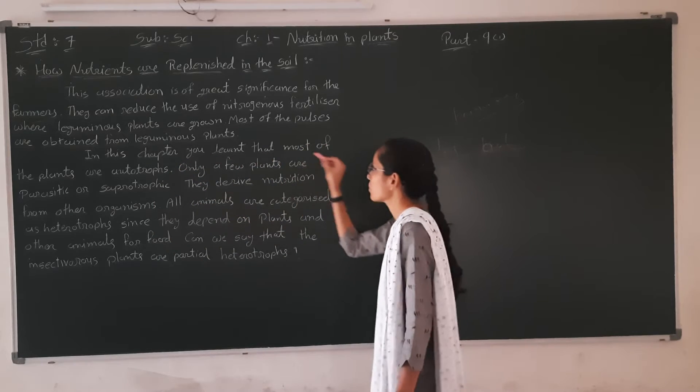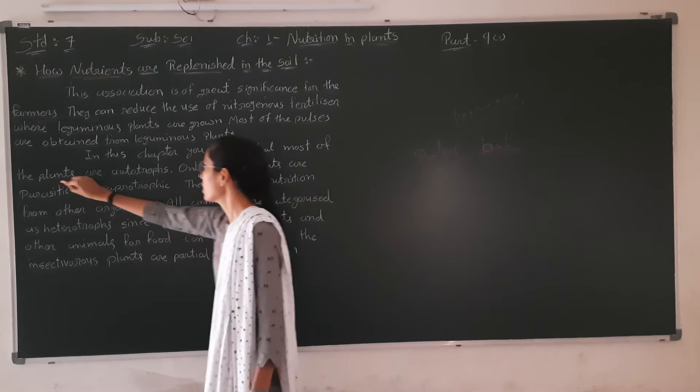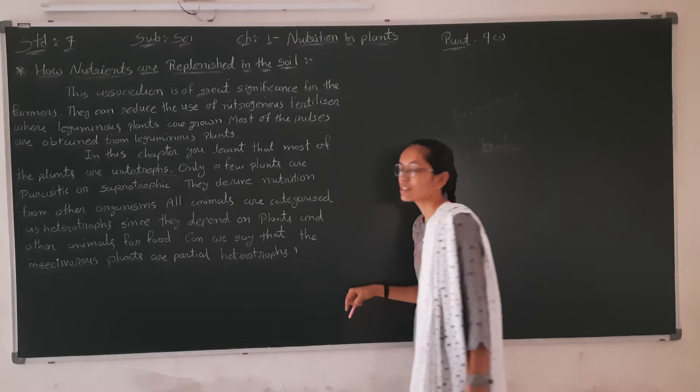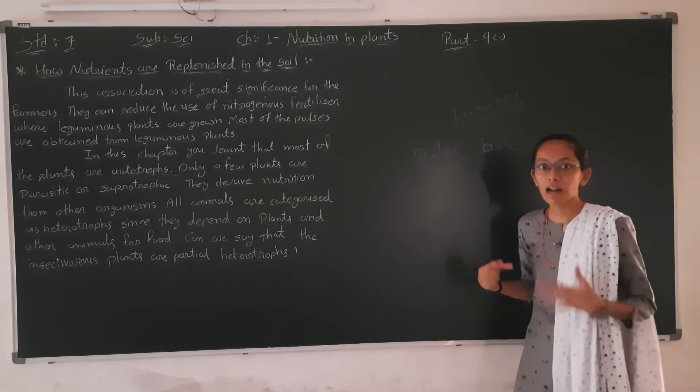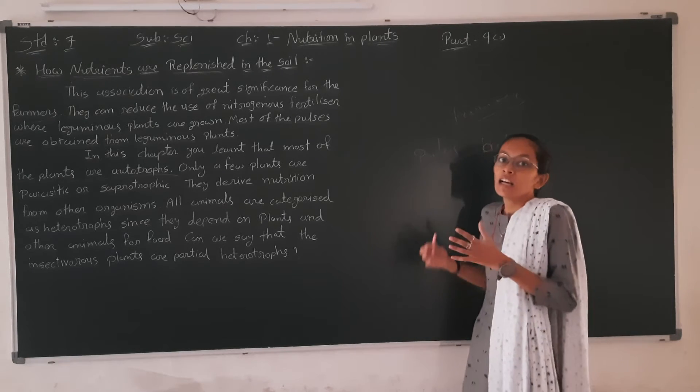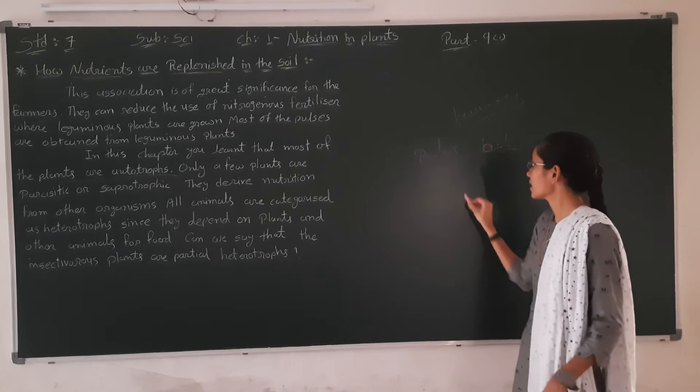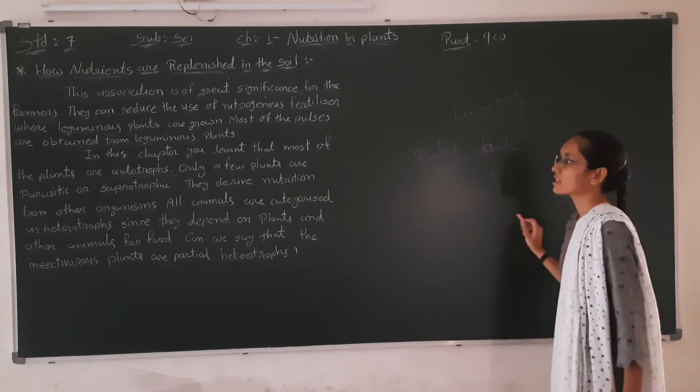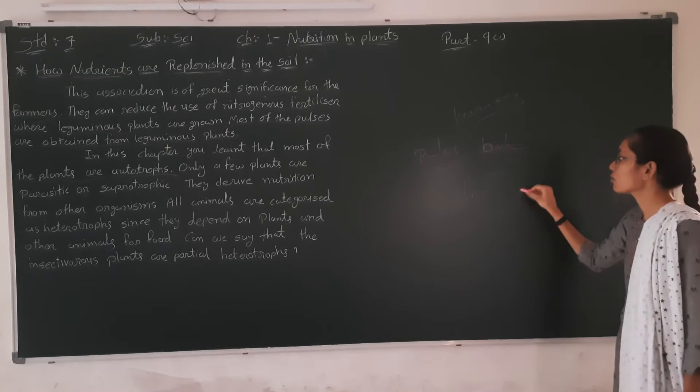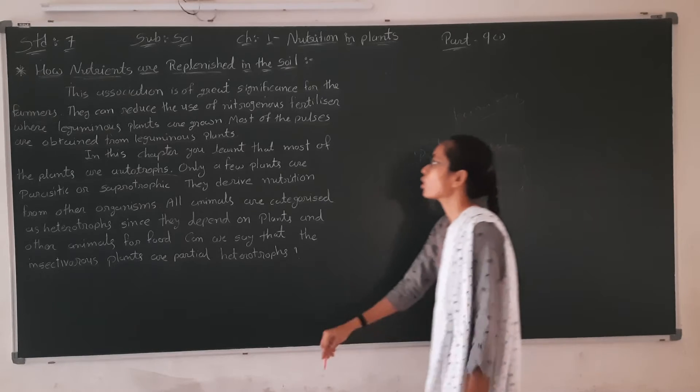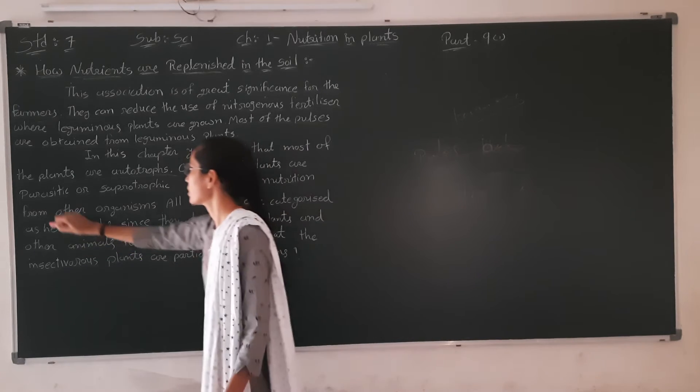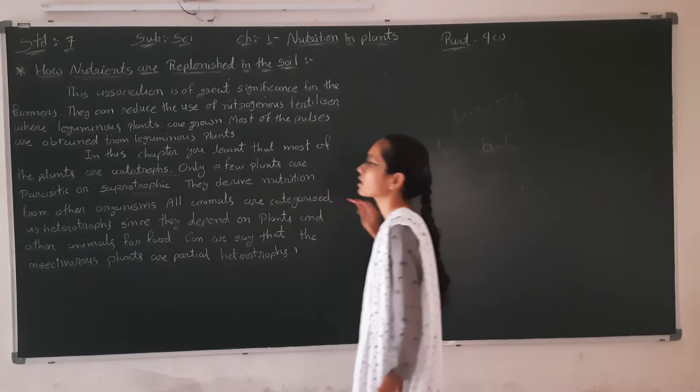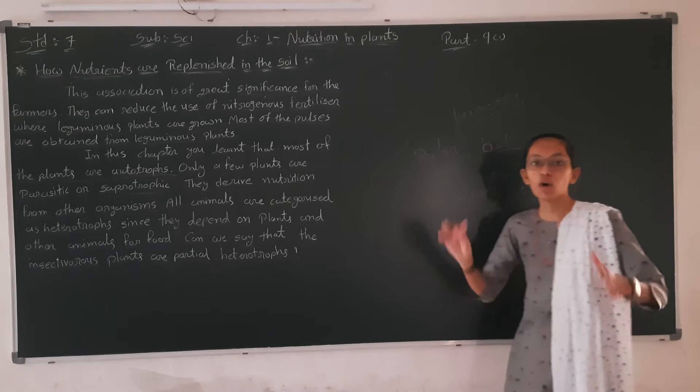Most plants are autotrophic, but some plants are heterotrophic, meaning they cannot make their own food.